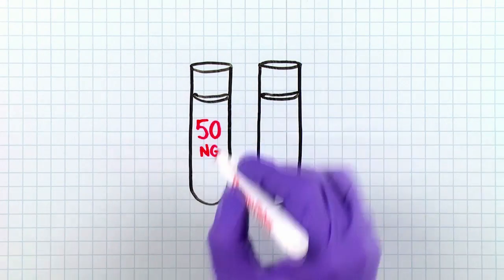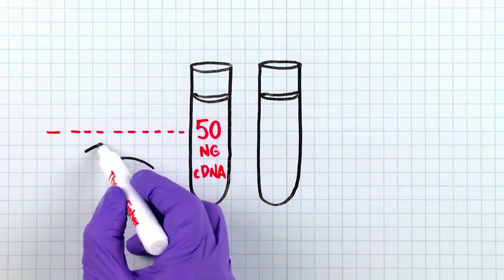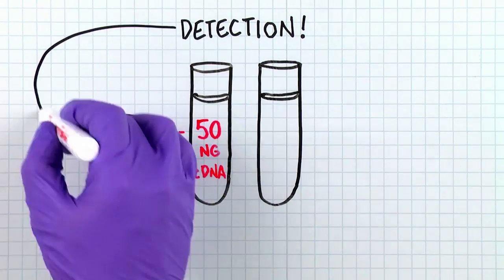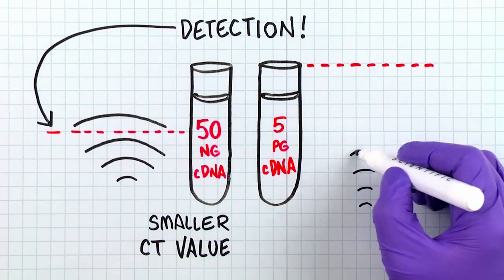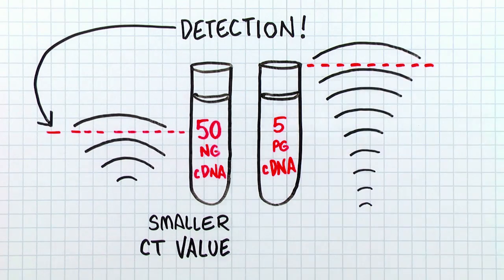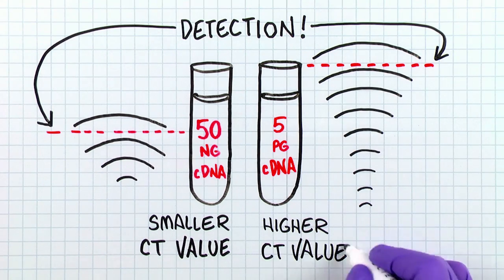The high concentration, 50 nanograms per microliter standard, will cross the detection threshold first, generating a low CT. The low concentration, 5 picograms per microliter standard, will take many more cycles to cross the same threshold, and therefore the CT will be higher.